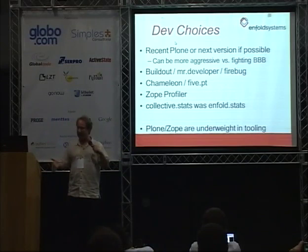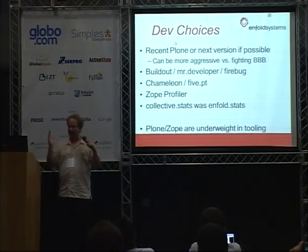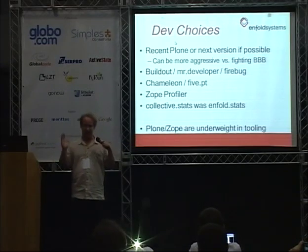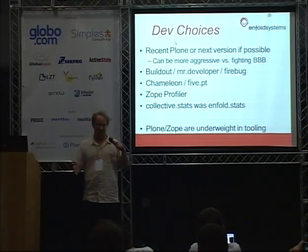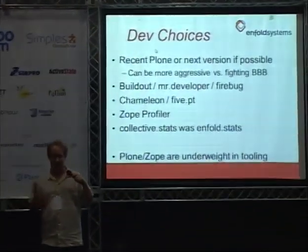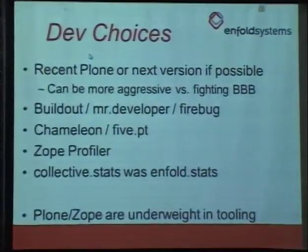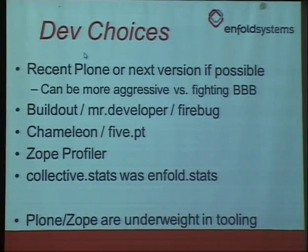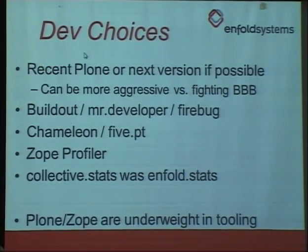Things we're talking about: Buildout, Mr. Developer, Firebug, and the templating engine. Using five.pt is very important for a host of reasons — not only because it's faster, but mainly because it gets the noise out of the profiler. If you're looking at a profile with a ZopePageTemplate, it's just noise and you cannot read it. You install five.pt, it works. We use it on every project. Not only does your system go faster, but you have no noise inside your profiles.